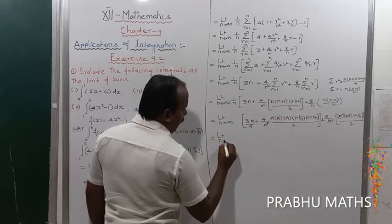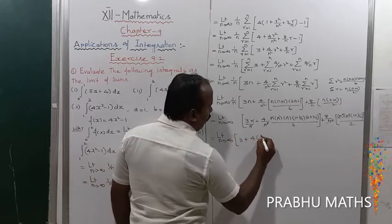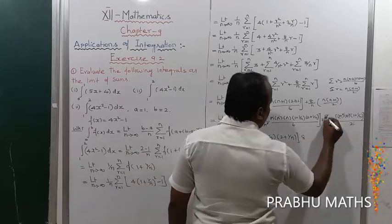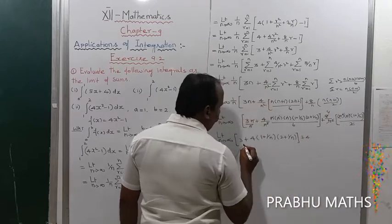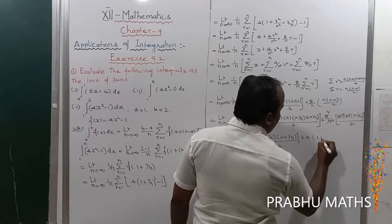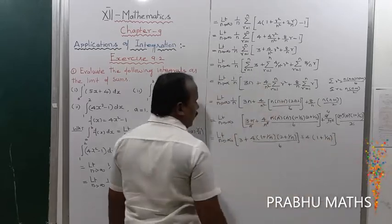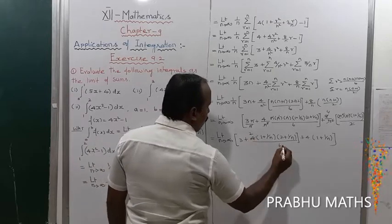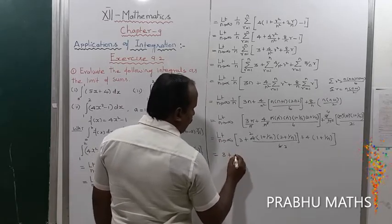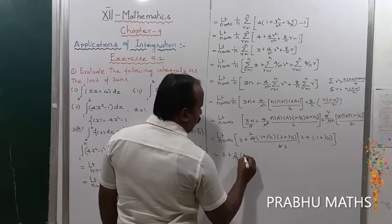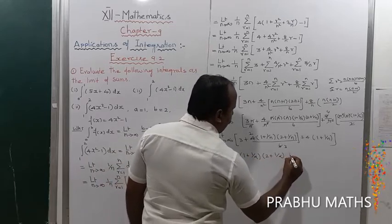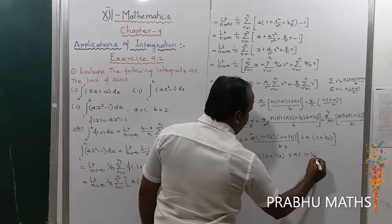After cancellation, we get: limit n tends to infinity of [3 + (4)(1 + 1/n)(2 + 1/n)/6 times 2 + 4 times (1 + 1/n)]. Applying the limit as n tends to infinity, 1/n becomes 0, giving 1/infinity equals 0. So: 3 + (4/6)(1 + 0)(2 + 0) plus 4(1 + 0).